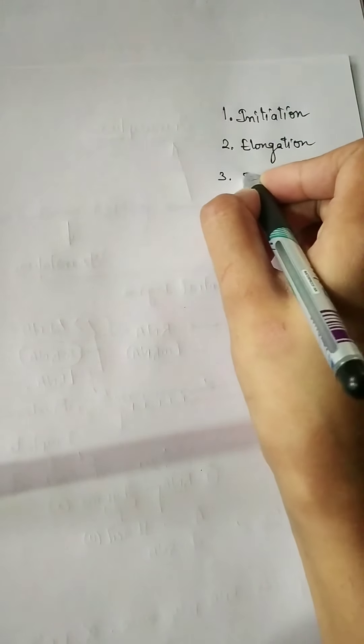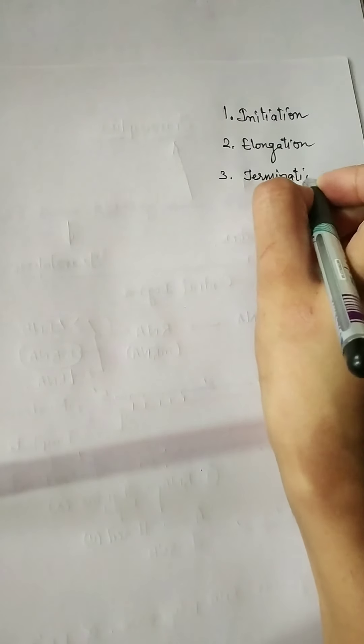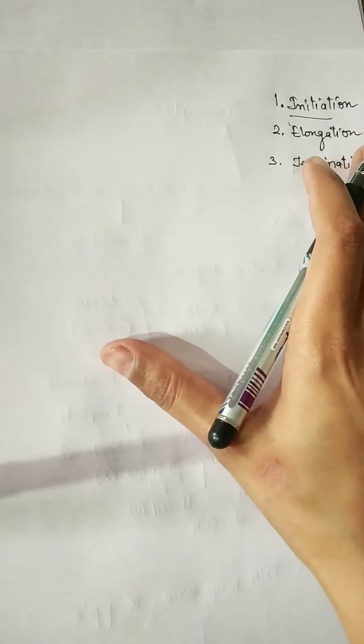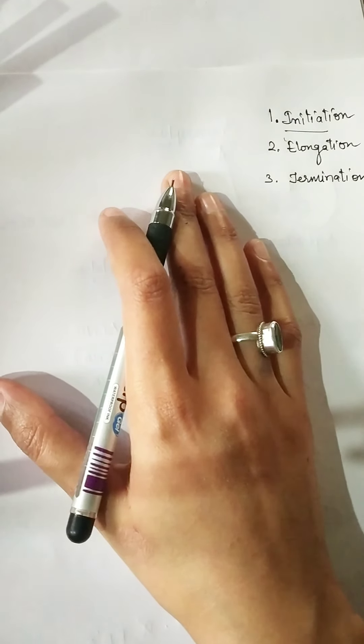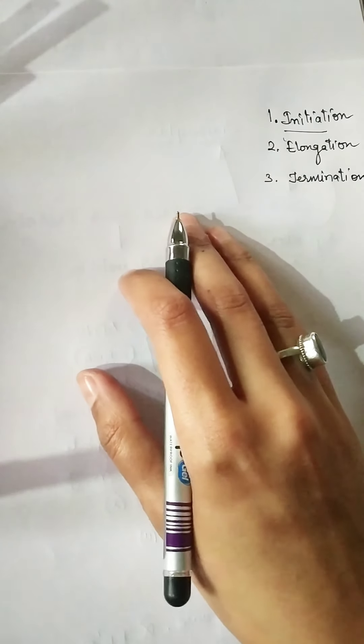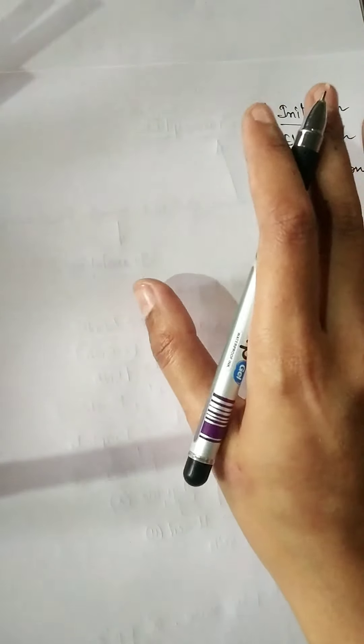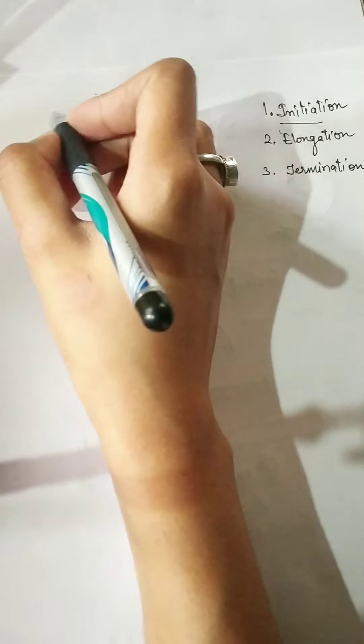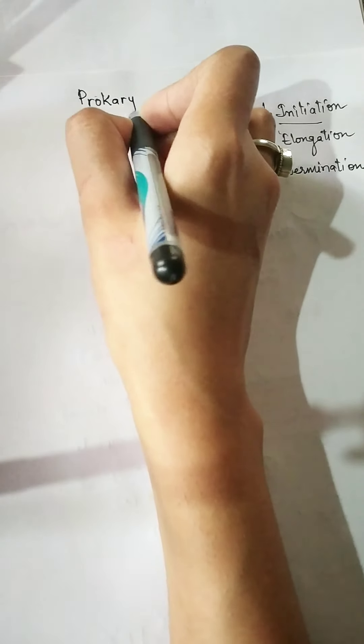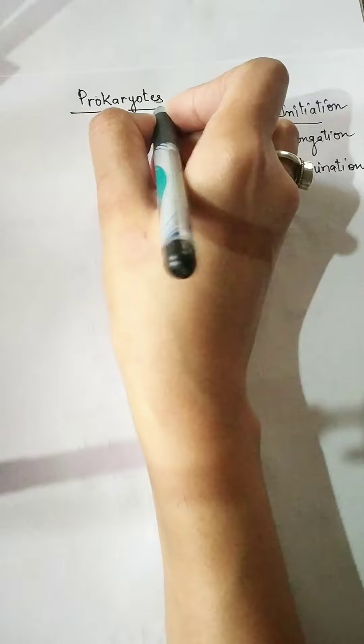There are three steps or processes that occur in transcription. The first one is initiation, the next one is elongation, and the third one is termination. Now we are going to discuss initiation mainly in prokaryotes.